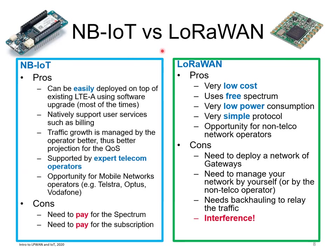There are two main technologies to compare. Both are very famous and popular. The first uses the licensed band and is mainly deployed by telecom operators: NB-IoT, overseen by 3GPP, which also standardized LTE (4G), UMTS (3G), and the upcoming 5G. The second is LoRaWAN, which uses free spectrum and is overseen by the LoRaWAN Alliance.